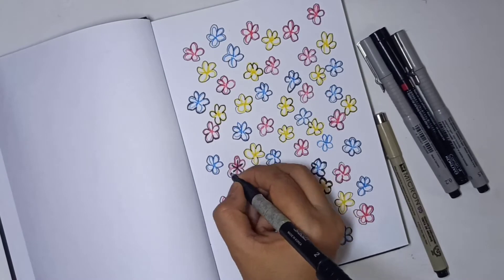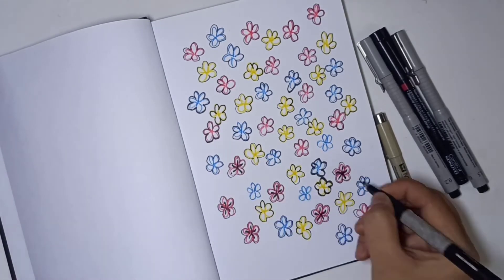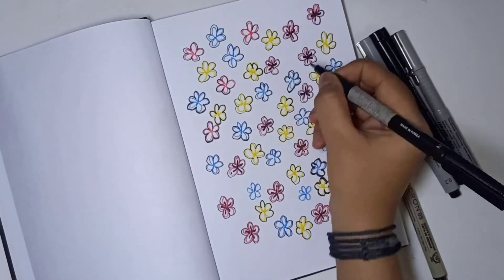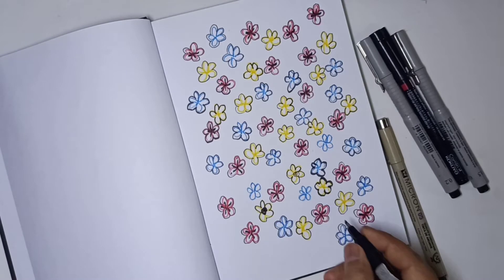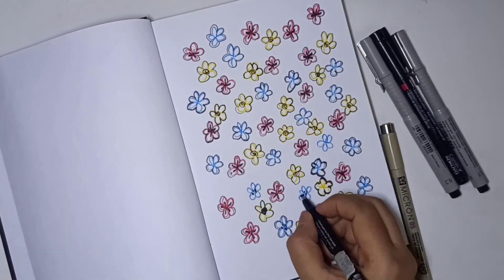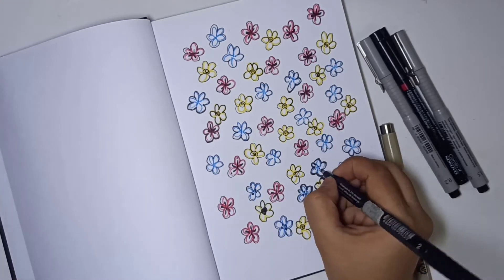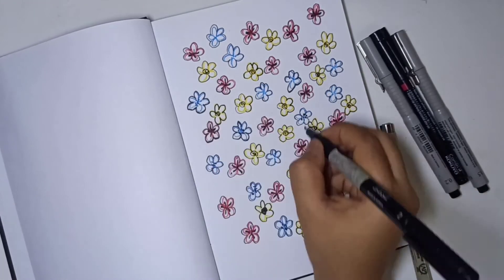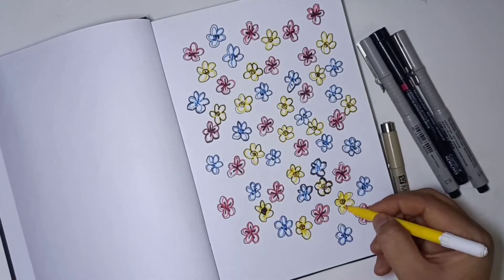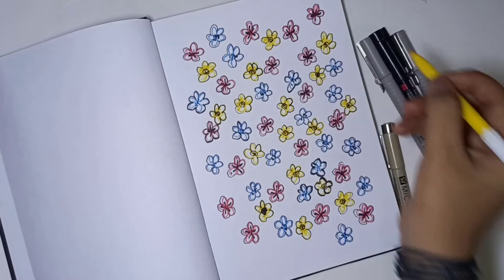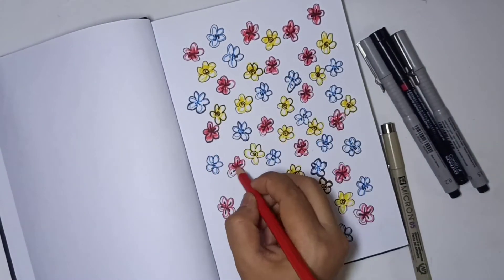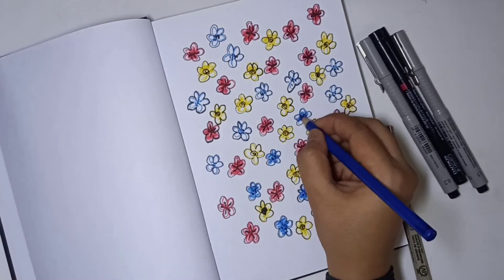Now we are going to add some different patterns in flowers. Wavy lines in red, circular pattern in yellow and dots in blue. Let's start coloring them. You can also draw patterns of flowers after coloring them, but using pen on color can misbehave with your pen and sometimes it also stops working.